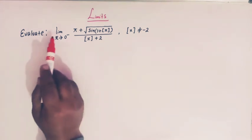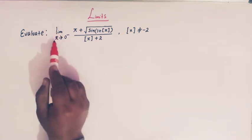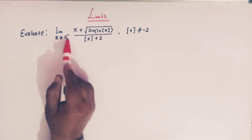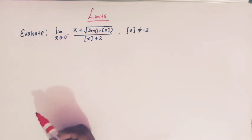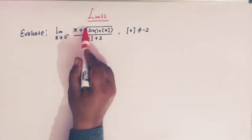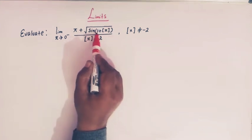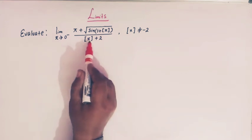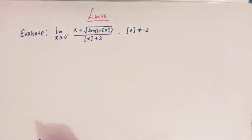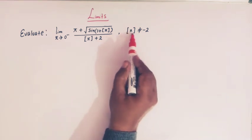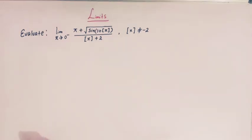We have to evaluate the limit as x tends to 0 minus, and this notation implies that we have to find the left-hand limit of this function. The function is: pi plus square root of sin of (1 plus greatest integer of x), divided by (greatest integer of x plus 2). The condition is that greatest integer of x is not equal to minus 2.